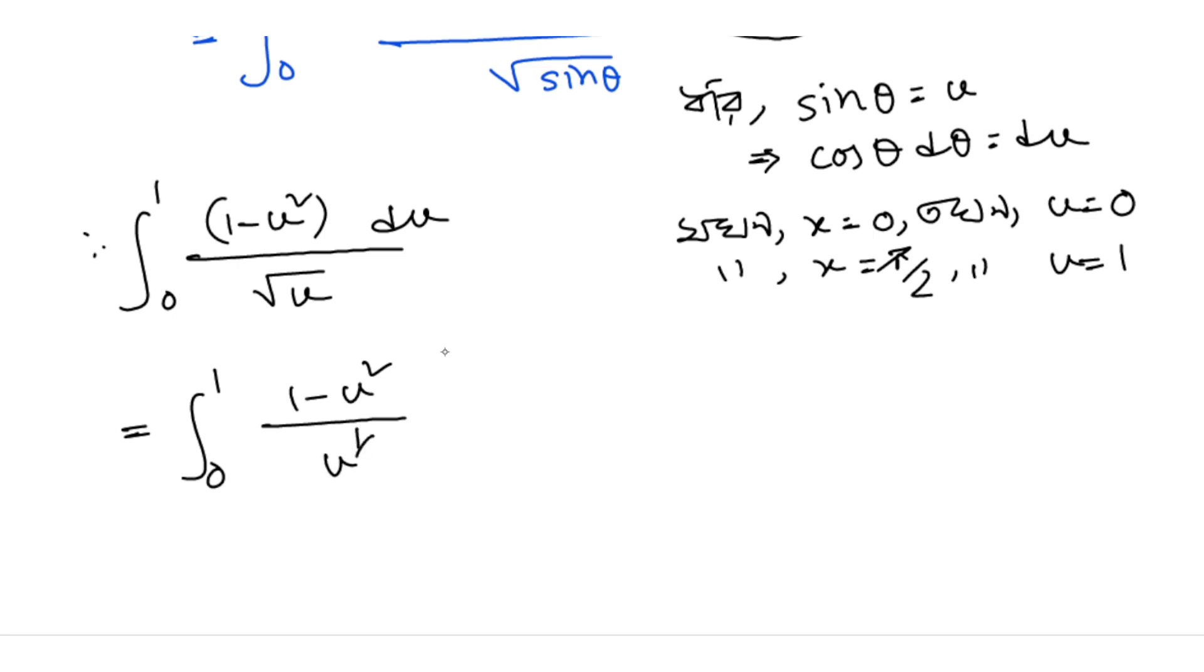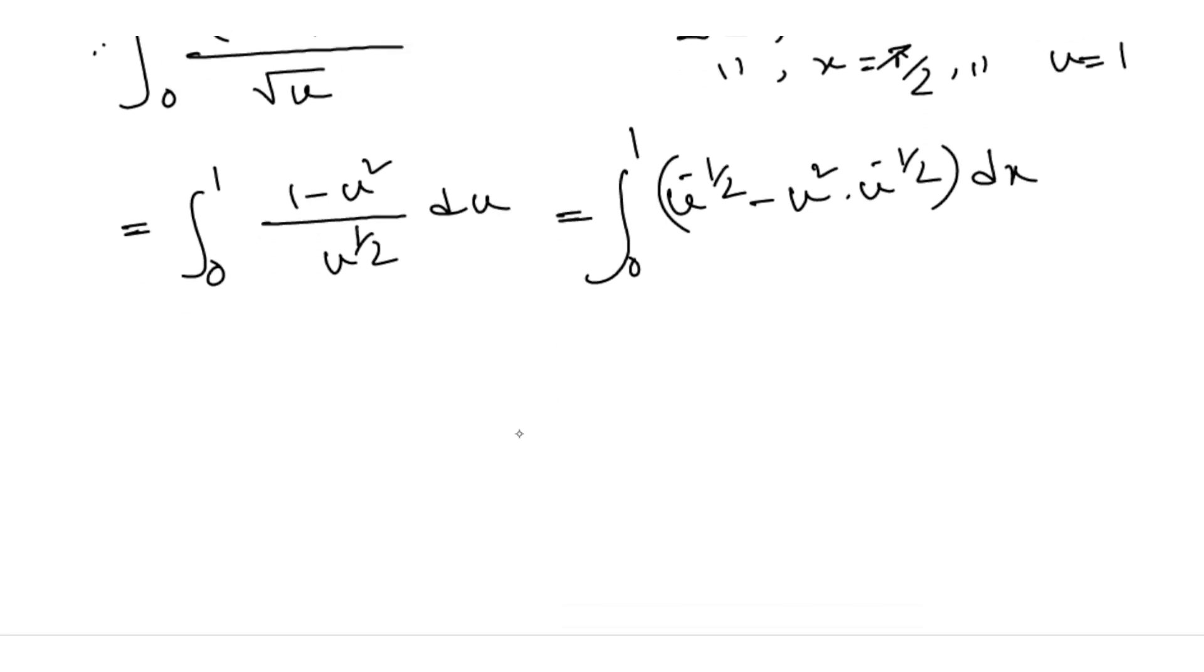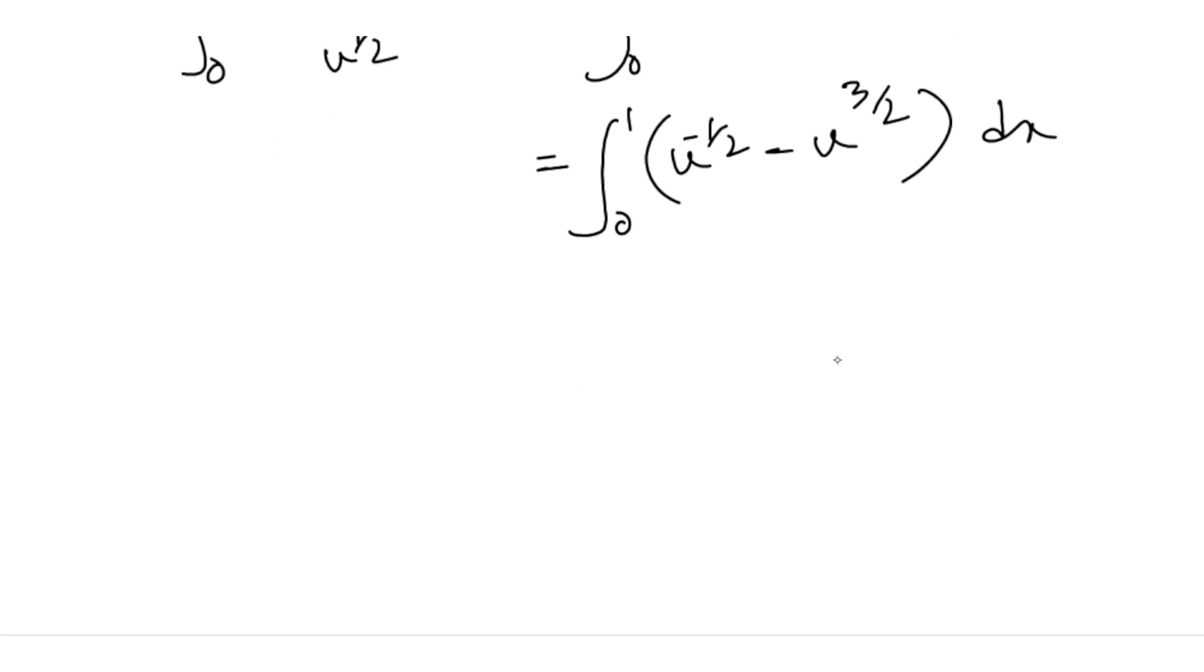Expanding this, we get the integral from 0 to 1 of (u to the negative 1/2 minus u to the 3/2) du. Now we can integrate: u to the 1/2 divided by 1/2 minus u to the 5/2 divided by 5/2, evaluated from 0 to 1.